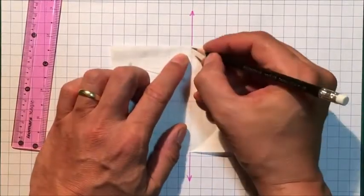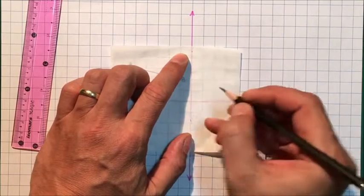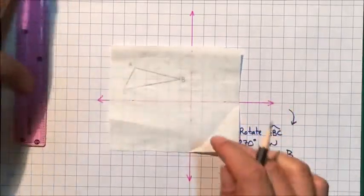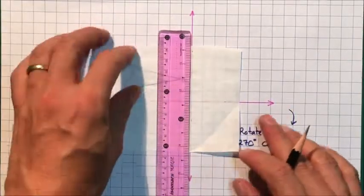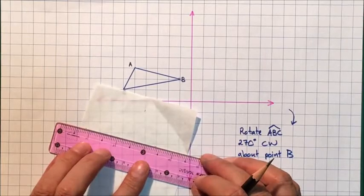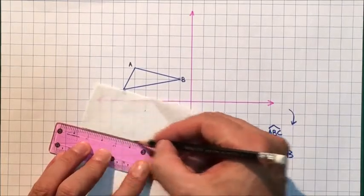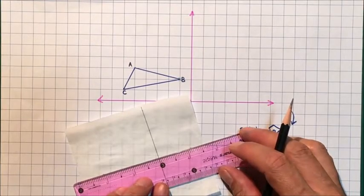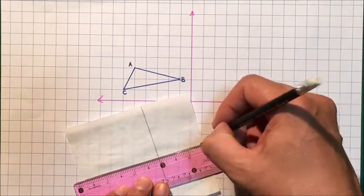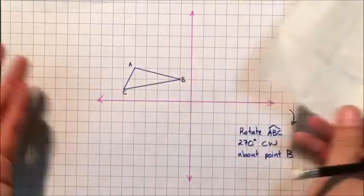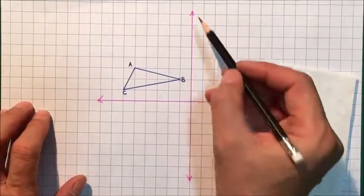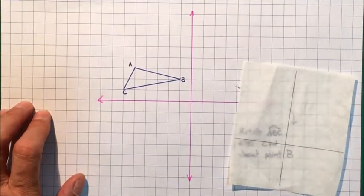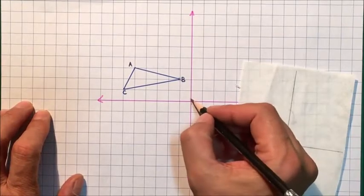Let's sort out our tracing paper. What I like to do as a preparation step is to draw on the tracing paper a set of axes, and that will help me do my rotations really accurately. For a while I won't be referring to these pink axes here, because I won't be using the origin as the center of rotation. I'm going to be using point B.